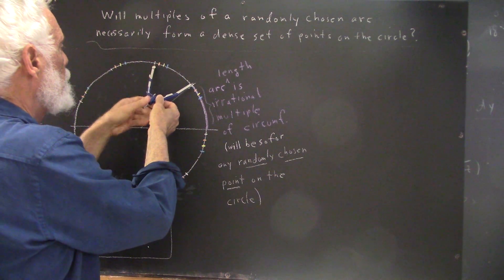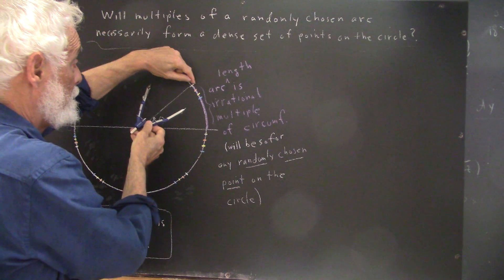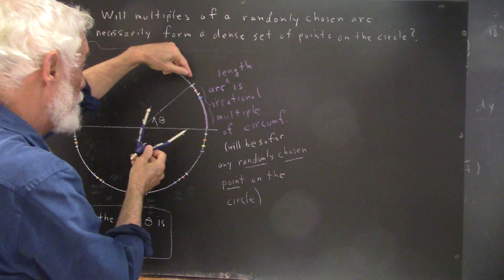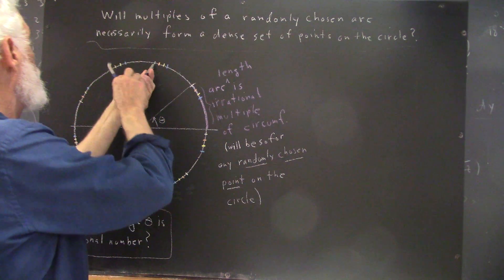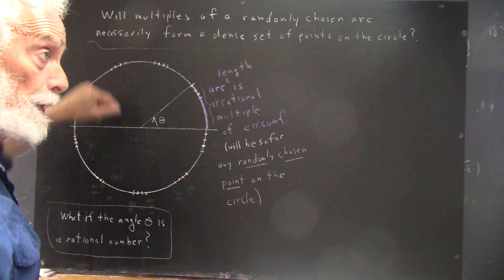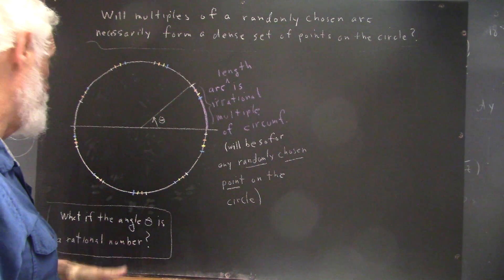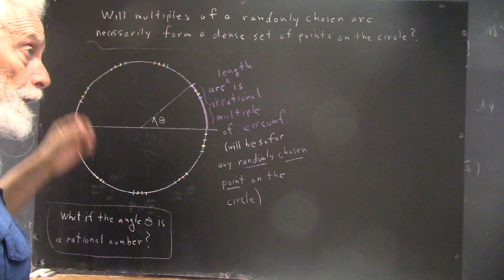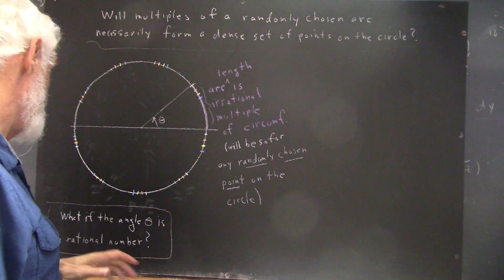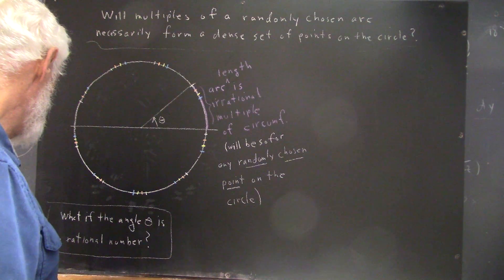So here we go. Okay. So, here is one multiple of the arc. That's double the arc. Then I move from here to here and mark the point, and that's triple the arc. Now, obviously, it's impossible to actually mark a point because you would have to have infinite precision.